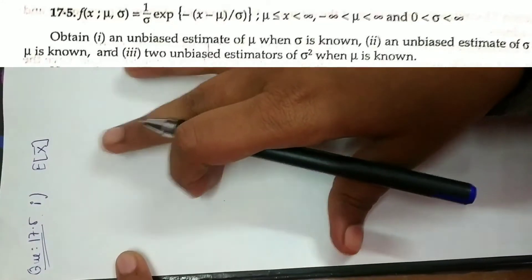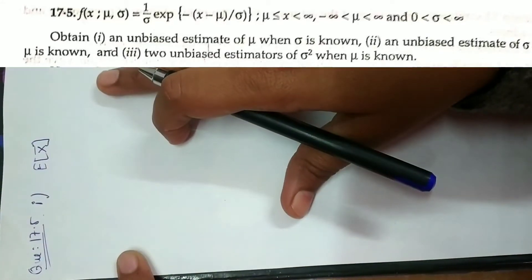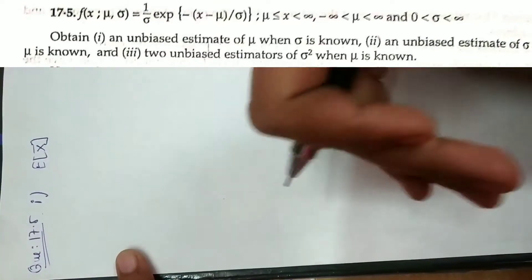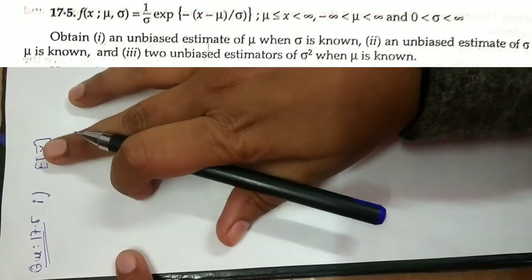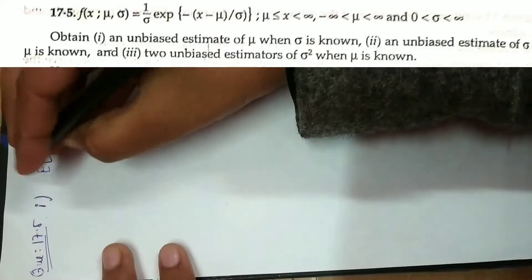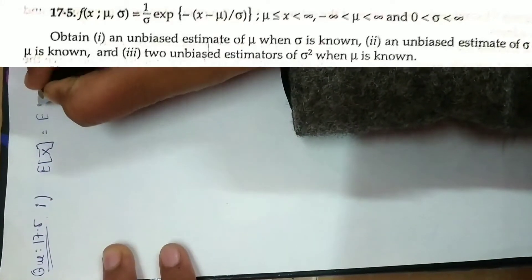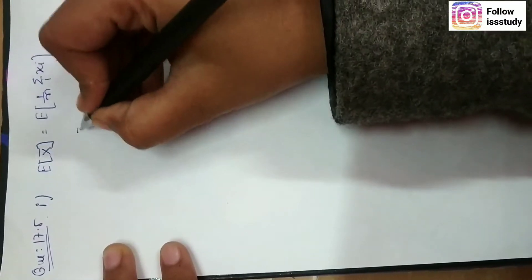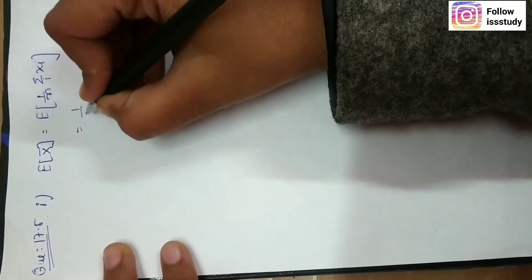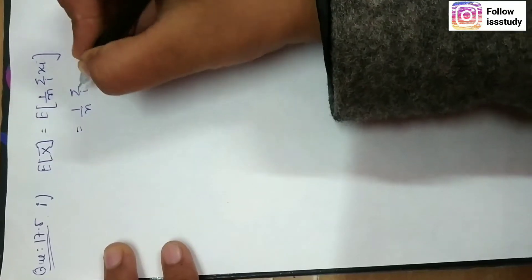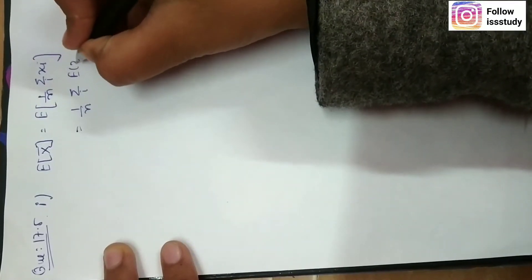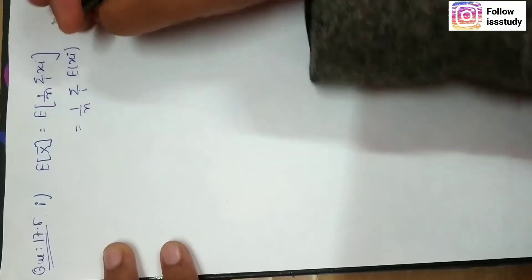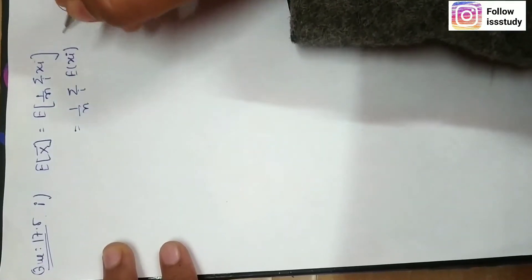Here we have no options given in the book, so we will try to see what can be the unbiased estimator of μ. If we take x̄ here, we will see what happens. If we find the expectation of x̄, then you can see that x̄ is a constant, so we will take x̄ out of the bracket and expectation is directly applied.